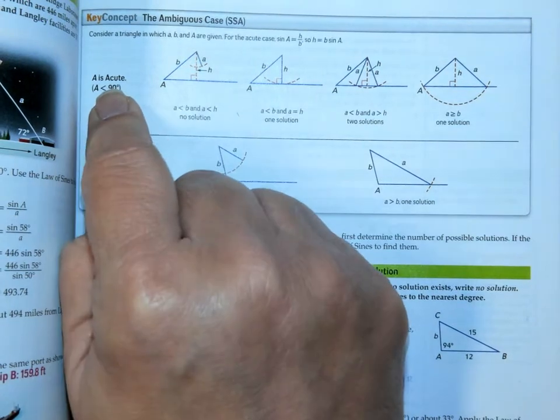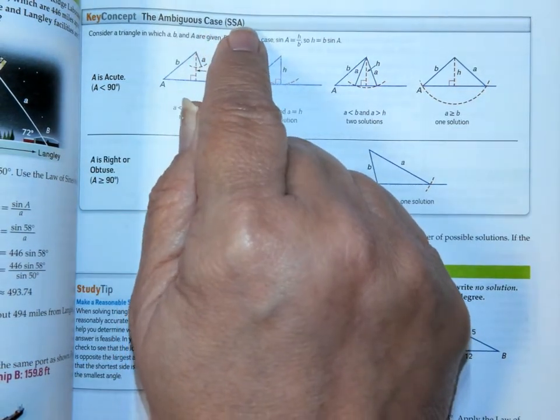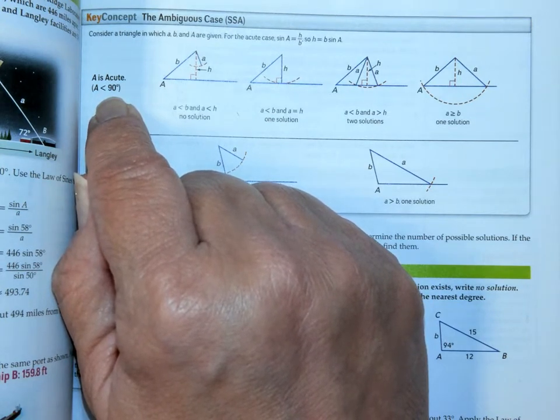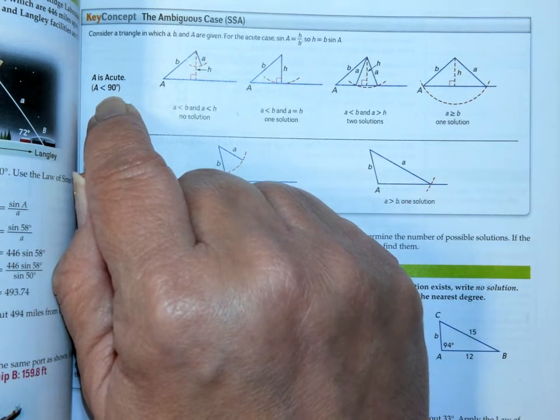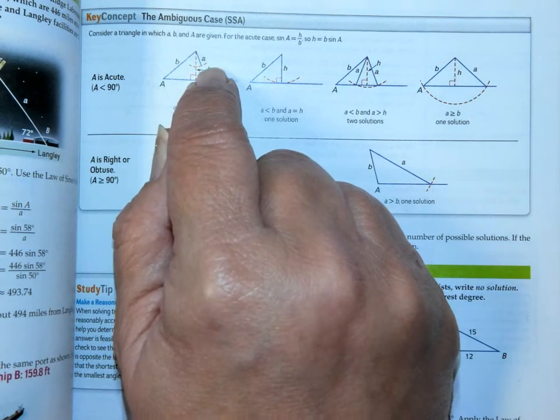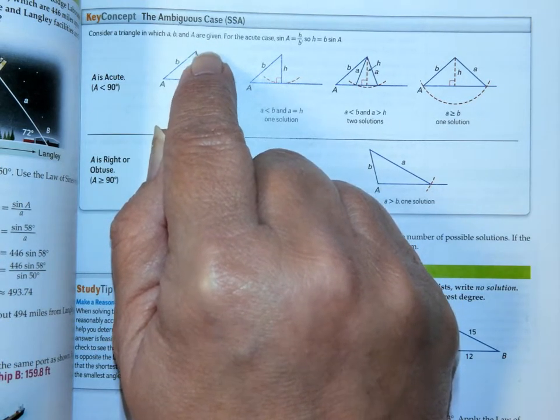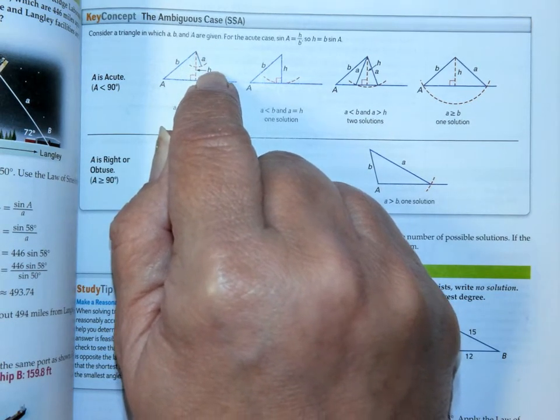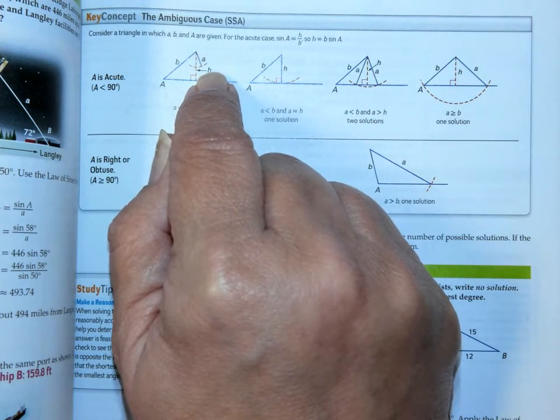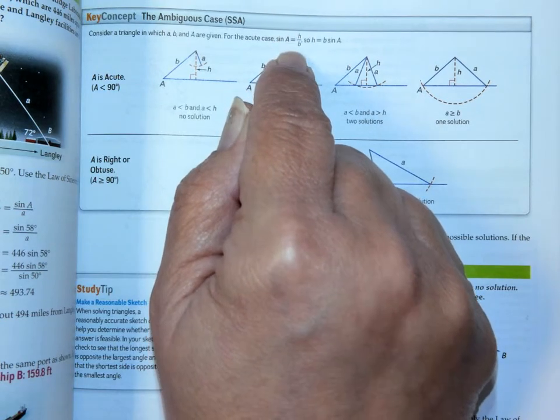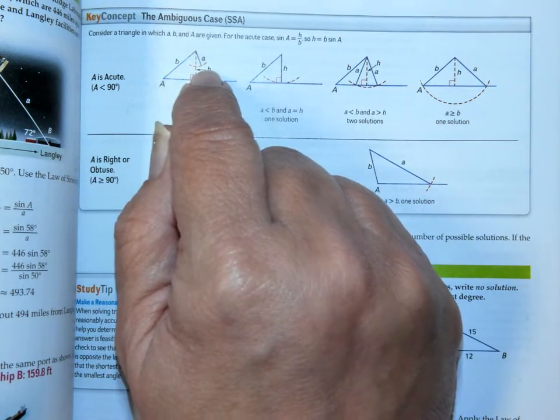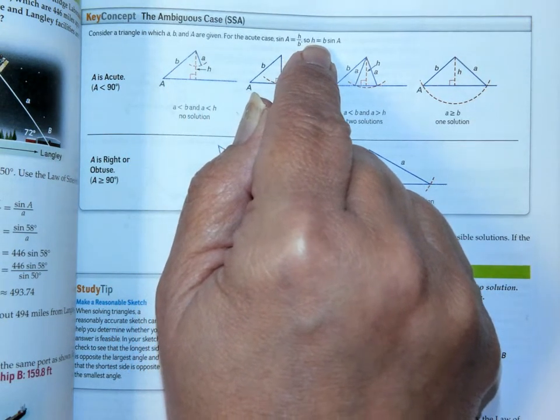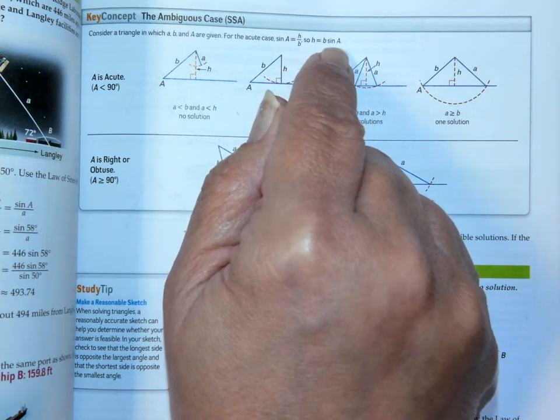The place where it gets really complicated is if you've got side-side angle and angle A happens to be acute. This is not a large percentage of our triangles, this is just sometimes. When this happens, we need to know the height of the triangle. Well, we don't actually know the height, so we're going to have to have a calculation for the height. So this height is going to be sine A equals H over B. Opposite over hypotenuse for sine. And so H is going to equal B times the sine of A. That's how we're going to calculate the height.